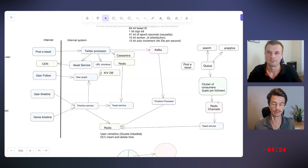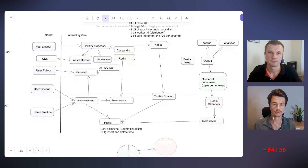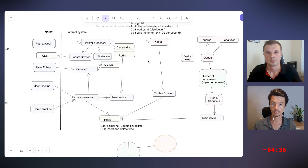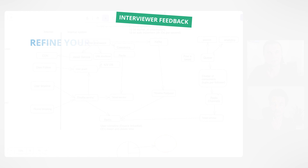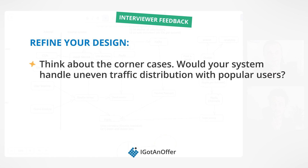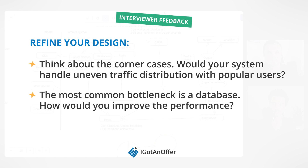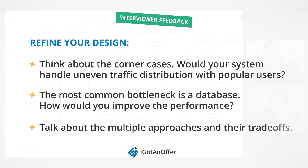Okay, that makes a lot of sense. Eugene, I think we've run out of time — we're going to have to wrap the interview up there. As you come to the end of the interview, think about corner cases: can your system handle uneven traffic with popular users? The most common bottleneck is the database, so talk about how you could improve database performance, discuss multiple approaches and trade-offs. Eugene did this really well to round off a very impressive interview.